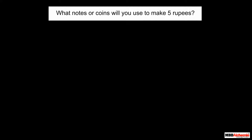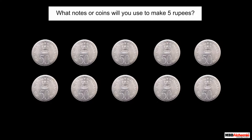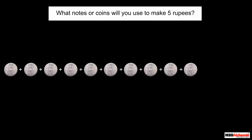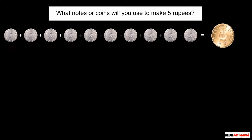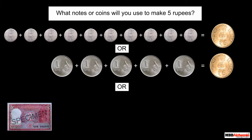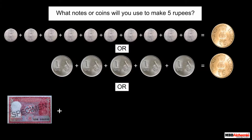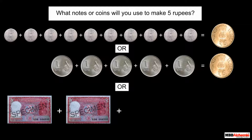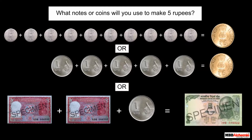What notes or coins will you use to make 5 rupees? 10 fifty-paise coins make 5 rupees. Or, 5 one-rupee coins or notes make 5 rupees. Or, 2 rupees plus 2 rupees plus 1 rupee is equal to 5 rupees.